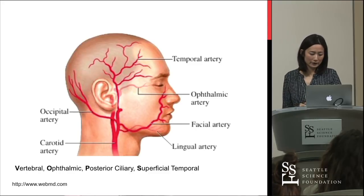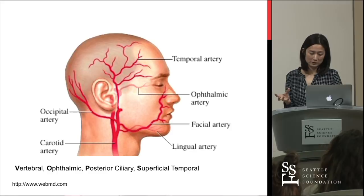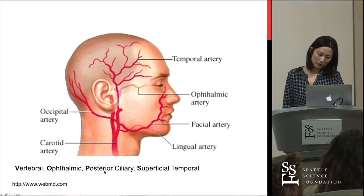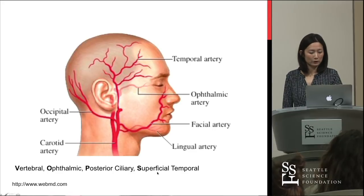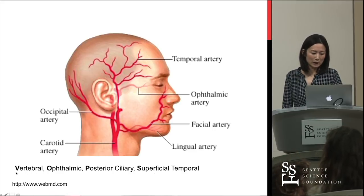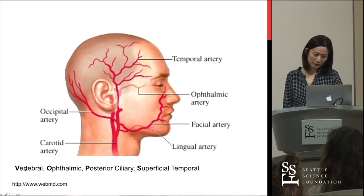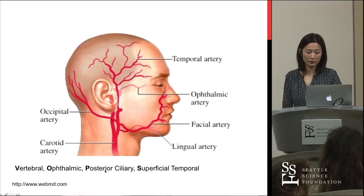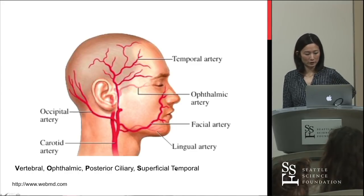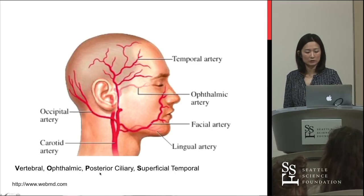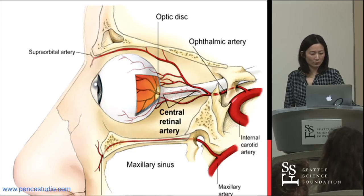Giant cell arteritis likes to involve the large and medium-sized vessels. The most commonly involved vessels are the vertebral artery, the ophthalmic artery, the posterior ciliary artery, and the superficial temporal artery — memorized as 'VOPS.' What's not depicted in diagrams is sometimes the vertebral artery and the posterior ciliary artery. You may know the vertebral, ophthalmic, and superficial temporal arteries, but exactly where is the posterior ciliary artery, and why is it important?